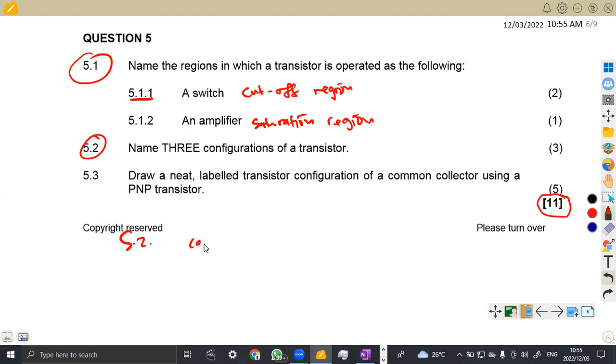It can be a common base. These are the configurations. So you can have a common base. All you just need is to take your transistor. This is a normal transistor, guys. You just need to know the legs of a transistor. We have got the base here. We have got the collector and the emitter.